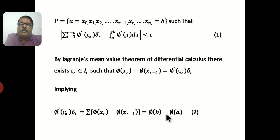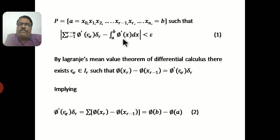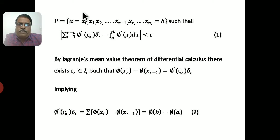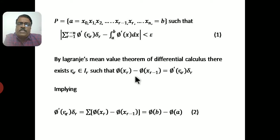There exists a partition P = {A = x₀, x₁, x₂, ..., xᵣ₋₁, xᵣ, ..., xₙ = B} such that the absolute value of [summation of φ′(ξᵣ)·δᵣ − integral from A to B of φ′(x) dx] is less than epsilon. Call this equation (1). By Lagrange's Mean Value Theorem, there exists a point ξᵣ in Iᵣ such that φ(xᵣ) − φ(xᵣ₋₁) = φ′(ξᵣ)·δᵣ.